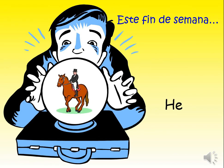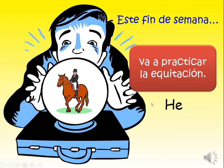'He is going to ride a horse' - we haven't done this much, so you could find it from sports or healthy living, or look up 'ride a horse' on Word Reference. The answer: 'va a montar en caballo' - M-O-N-T-A-R en caballo, C-A-B-A-L-L-O. Or you could have done it more simply and said 'he is going to do horse riding': 'va a practicar la equitación'.